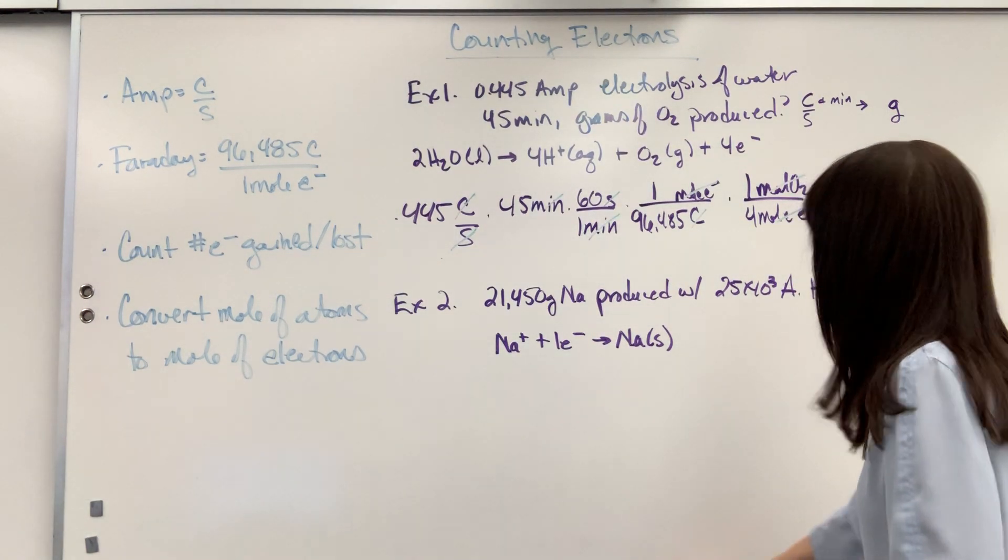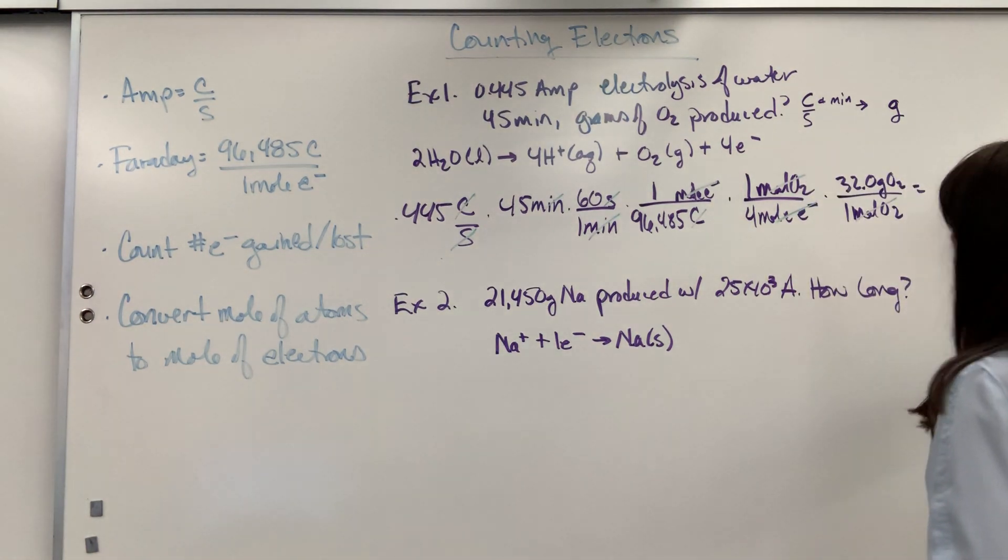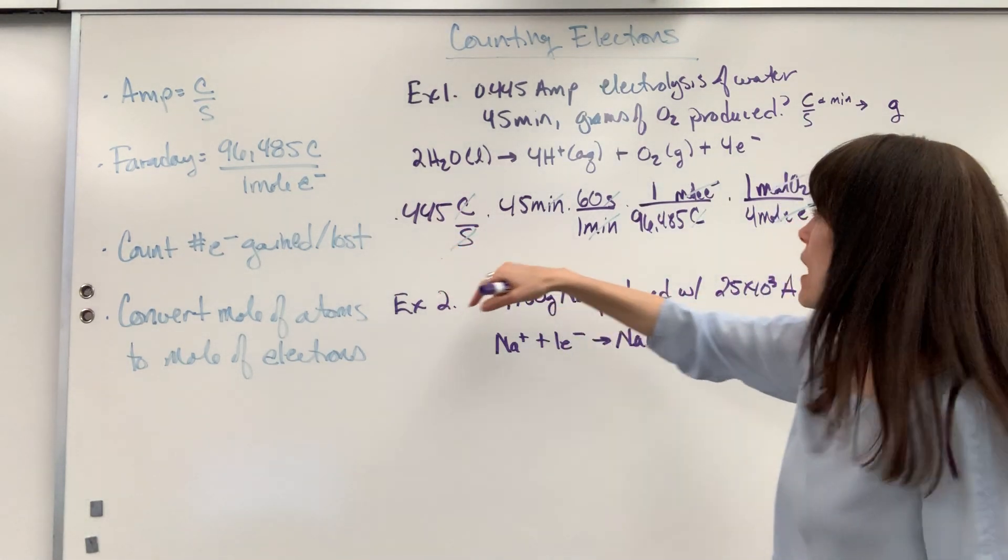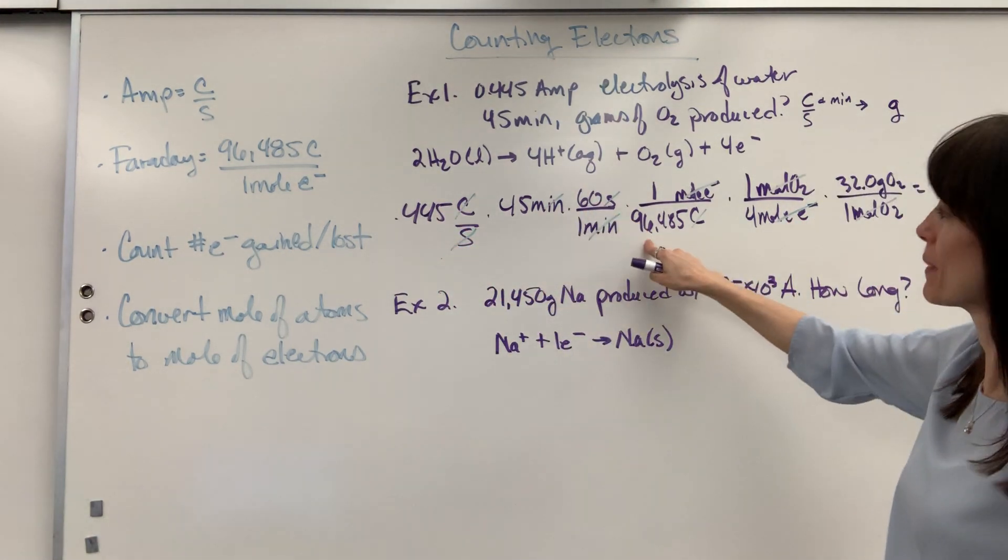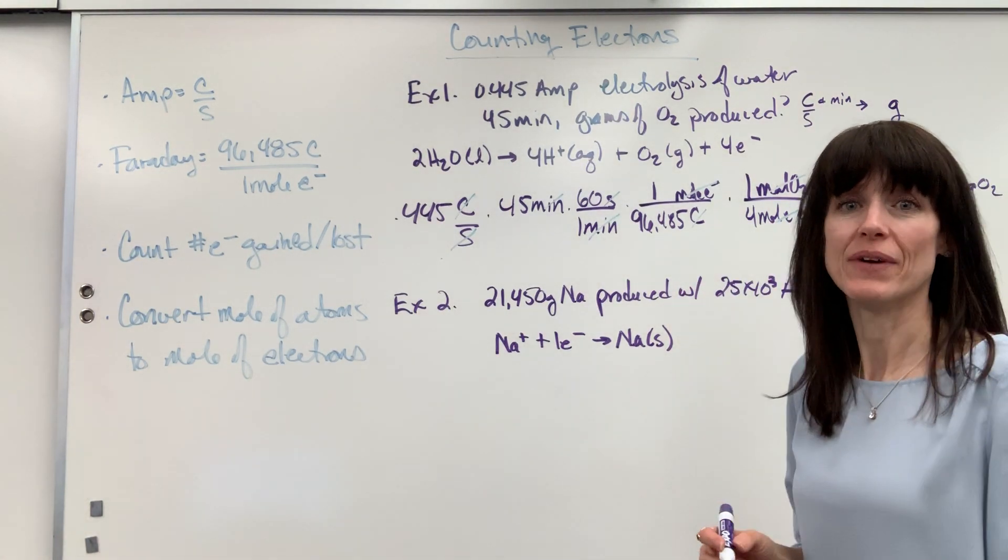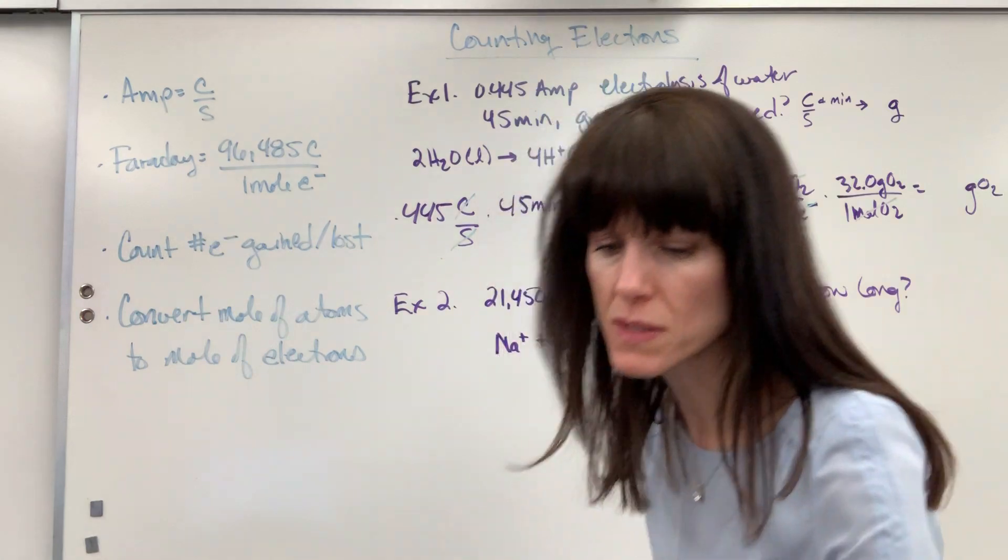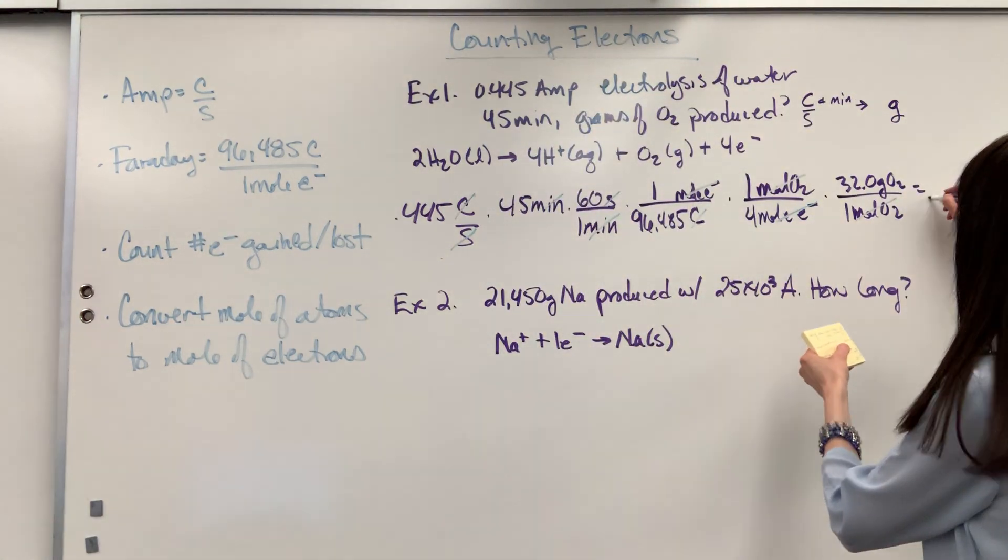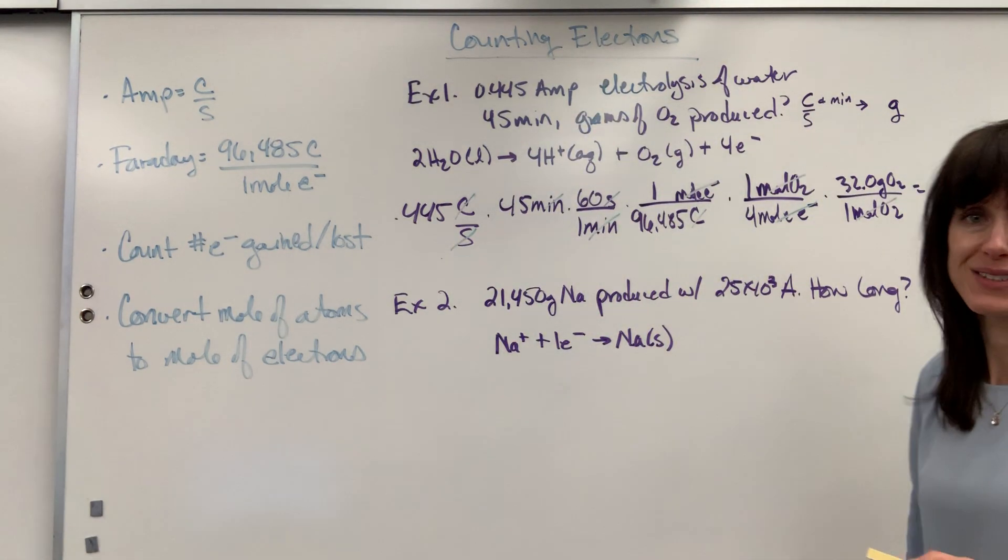So, 0.445 times 45 times 60 divided by 96,485 divided by 4 times 32. And that is going to give us, let's see here, 0.010 grams of oxygen. Pretty cool.